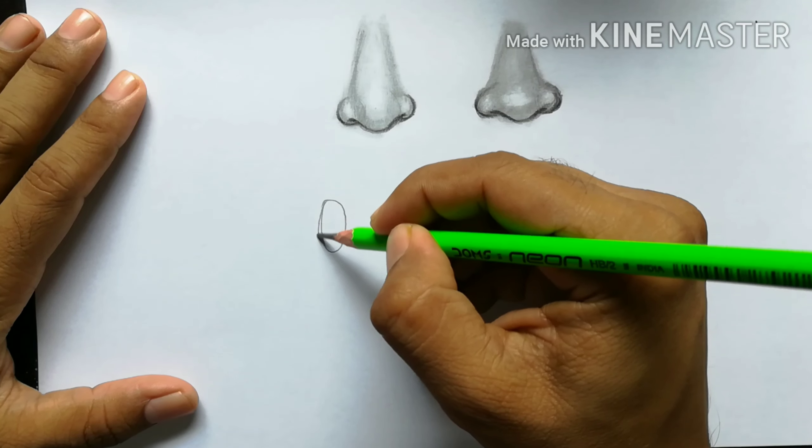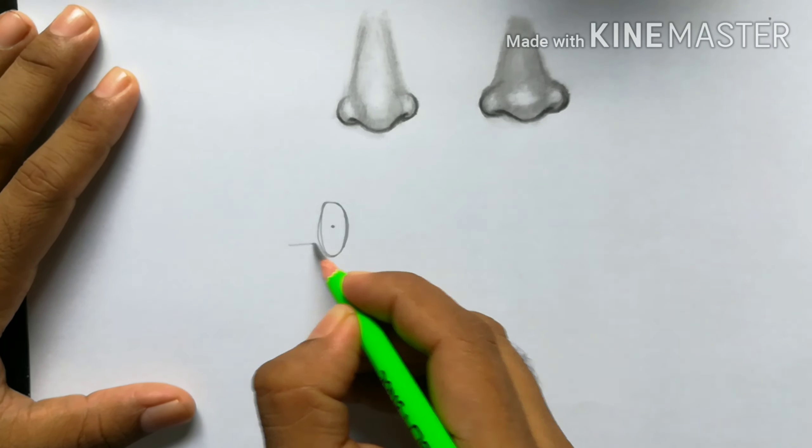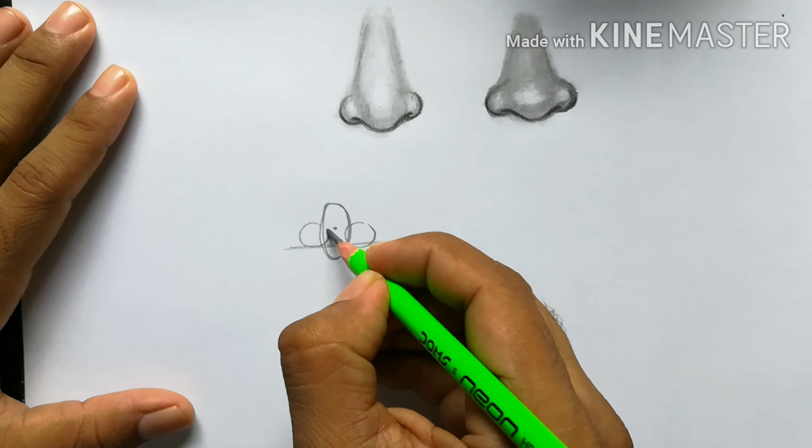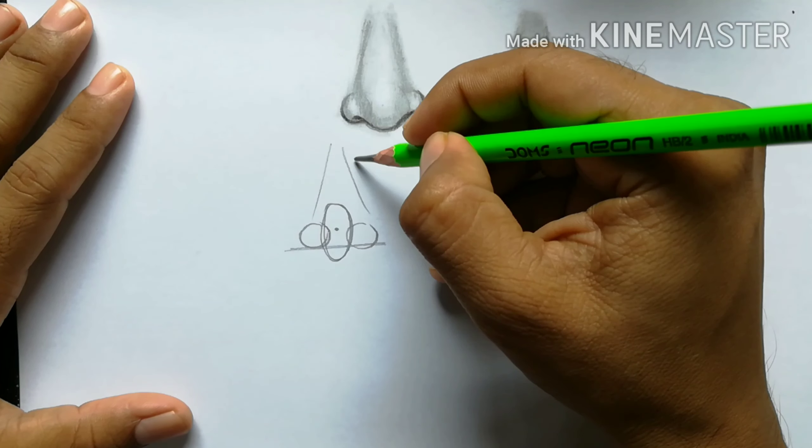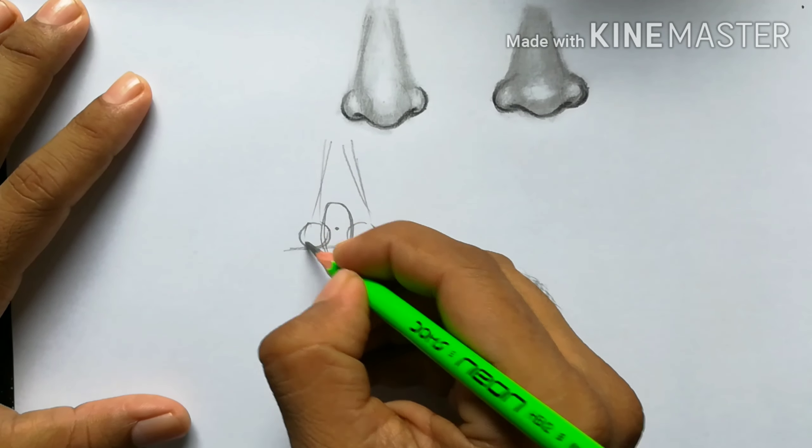Next we're going to draw a sharper nose. So here you have to draw a vertical oval in the center, and then you can proceed in the same way.